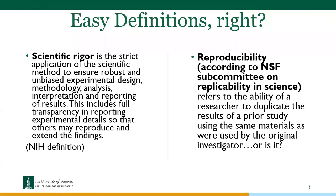NIH has a definition of scientific rigor: the application of the scientific method to ensure robust and unbiased experimental design, methodology, analysis, interpretation, and reporting of results. This includes full transparency in reporting experimental details so that others may reproduce and extend the findings.